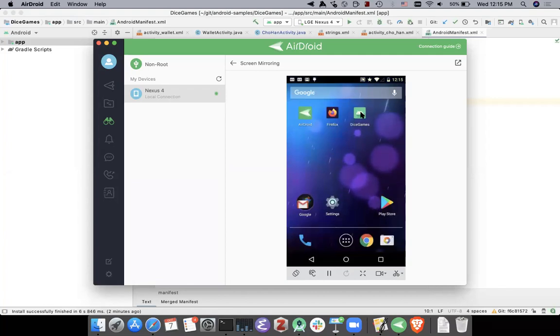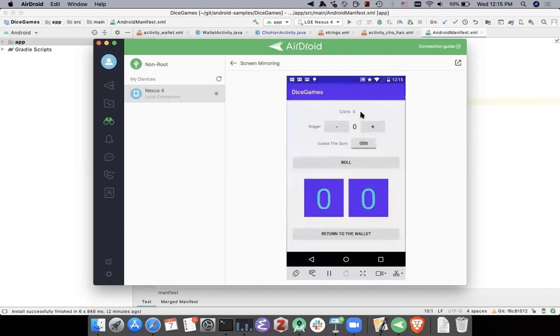Let's say at this point, I click my home button. Now, if I were to click the Dice Games icon on the home or the launcher screen, what happens?